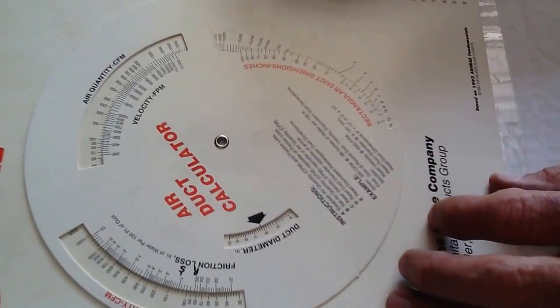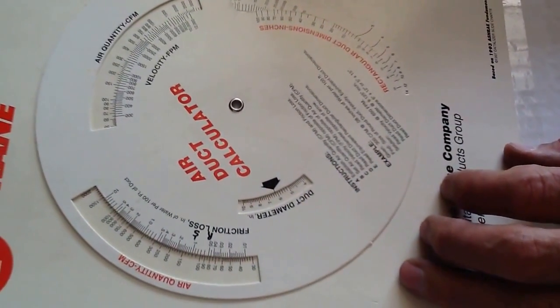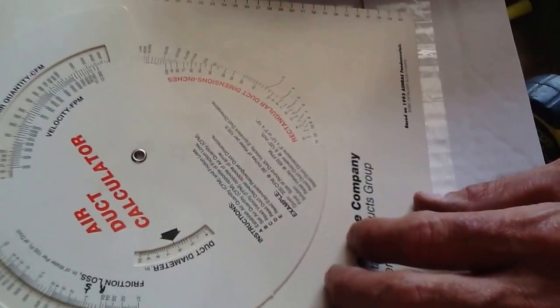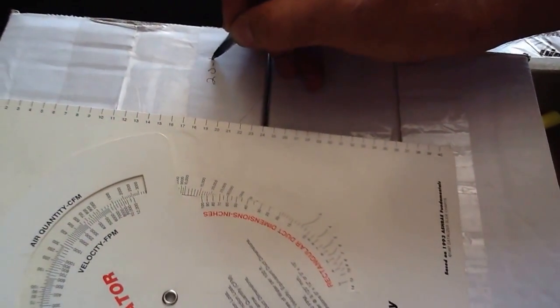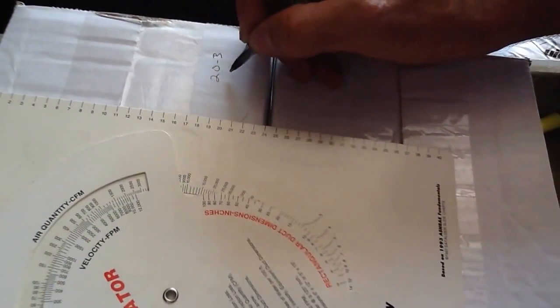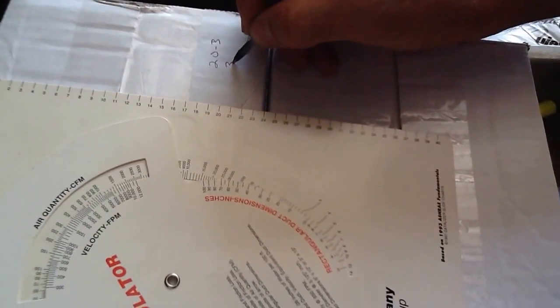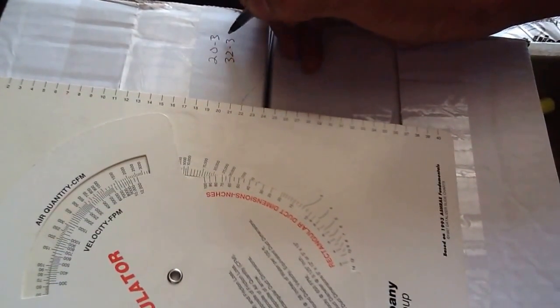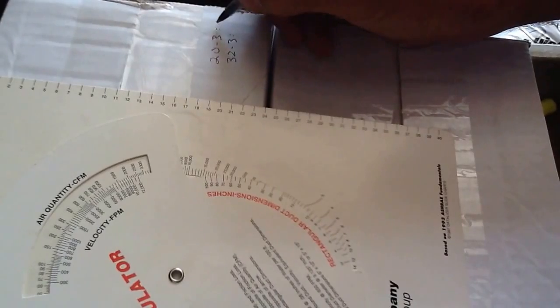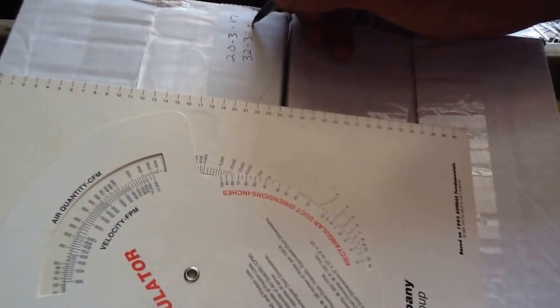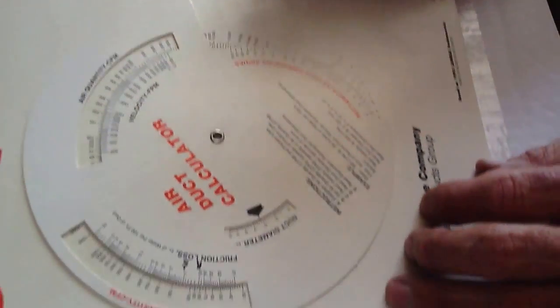We're going to subtract - let me just show you here - it was 20 minus three inches. Then you're going to go 32 minus three inches. So we're actually going to go 17 by 29 rectangular duct.